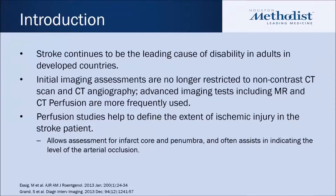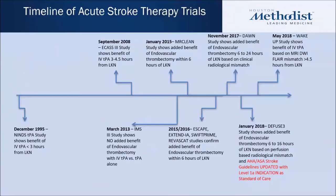Stroke continues to be the leading cause of disability in adults in developed countries, the fifth leading cause of mortality in the United States. Initial imaging assessments are no longer restricted to just non-contrast CT scan, which we have cardinally used since the advent of TPA and alteplase back in 1995. CT angiography, as of the 2015 studies showing the benefit of thrombectomy in the in-window population within six hours — we're going much past that. We're using advanced imaging tests, including MR imaging as well as CT perfusion imaging, to characterize time based on tissue and imaging characteristics. Perfusion studies can help define the extent of ischemic injury, allowing for assessment or estimation of infarct core, and both can give an estimate of the penumbra or salvageable tissue, often also indicating the level of arterial occlusion.